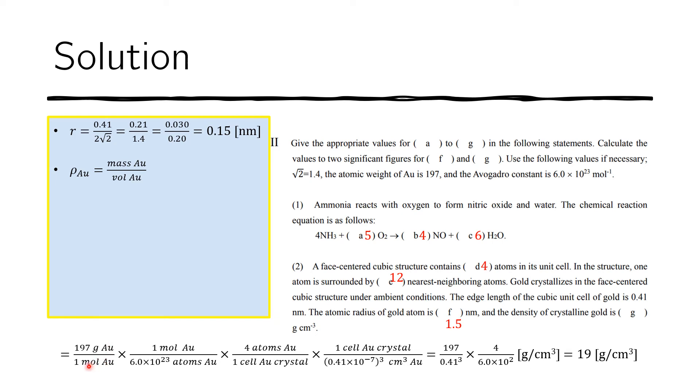And then the goal is to cancel the denominator. So we have mole gold here. And we also know that one mole of gold is actually equal to 6.0 times 10 to the 23 atoms of gold.